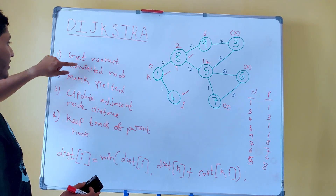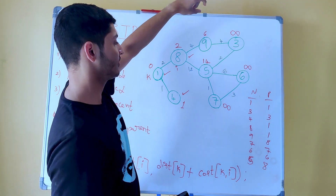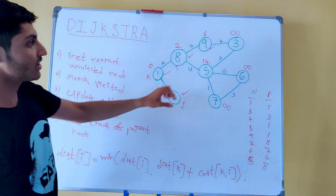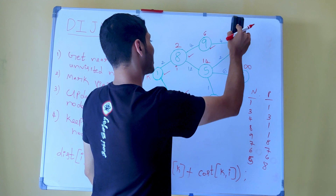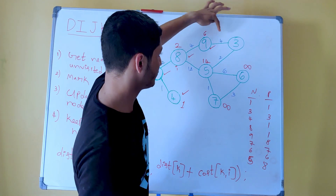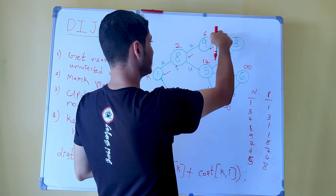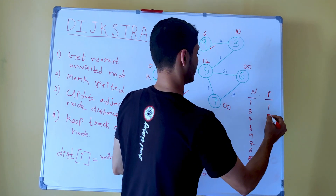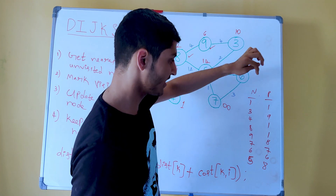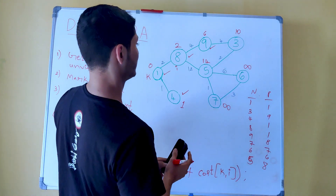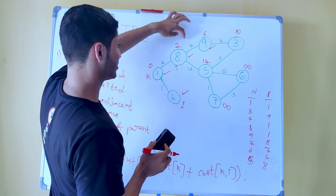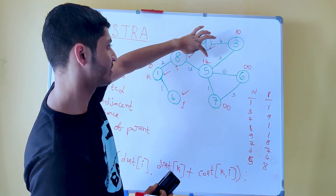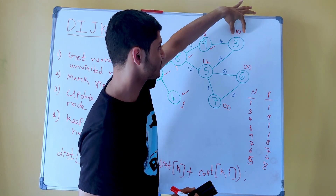Moving on to the next iteration, the nearest unvisited node is 9. We get this node, mark it as visited, and for all its adjacent nodes we update the distances. The new distance to node 3 is minimum of infinity and 6 plus 4, which is 10. 6 is the distance to reach node 9, plus the cost of going from 9 to 3, which is 4. So the new distance is 10. Since we updated the distance, we also update the parent: parent of 3 is 9. The other adjacent node 8 has a minimum distance of 2, so it will not change. The nearest unvisited node in the next iteration is 3, corresponding to minimum distance of 10.